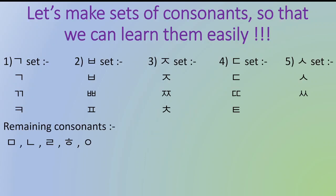So, we know that learning these consonants is a bit difficult, kyuunki hamne ye language hamesha nahi padhi hai bachpan se. To ye hamaare liye thoda difficult hoga learn karna. So, to make it easy, hum in consonants ko sets mein divide karte hain. Inke sets ke division inke sound ke according hai. Aap dhek sakte ho, maine 5 divisions kiye hain. Uske alawa jo remaining consonants hain woh hain ma, na, ra, ha, aur ang. Aap inke sounds ko baar baar sunne ki koshish kijiye and try to pronounce them accordingly, and you will be able to learn these consonants very easily within 15 to 30 minutes. Believe me, it's going to be fun.